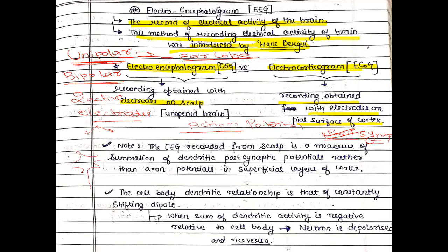Consider a neuron with a cell body and dendrites. The dendrites and cell body or soma have an alternating shifting between the dipoles — sometimes the direction of the dipole is towards the dendrite and sometimes away from the dendrite. EEG recorded from the scalp is a measure of the summation of the dendritic post-synaptic potentials rather than the axon potentials in the superficial layer of the cortex. The cell body–dendritic relationship is that of a constantly shifting dipole.